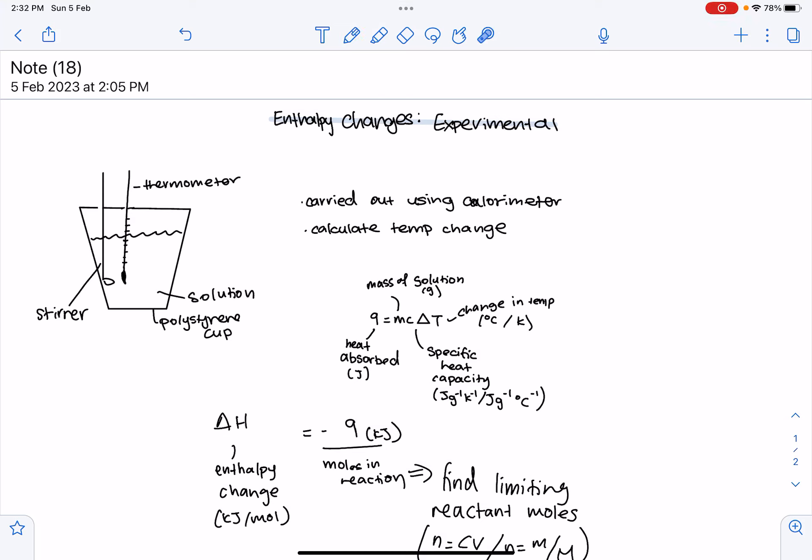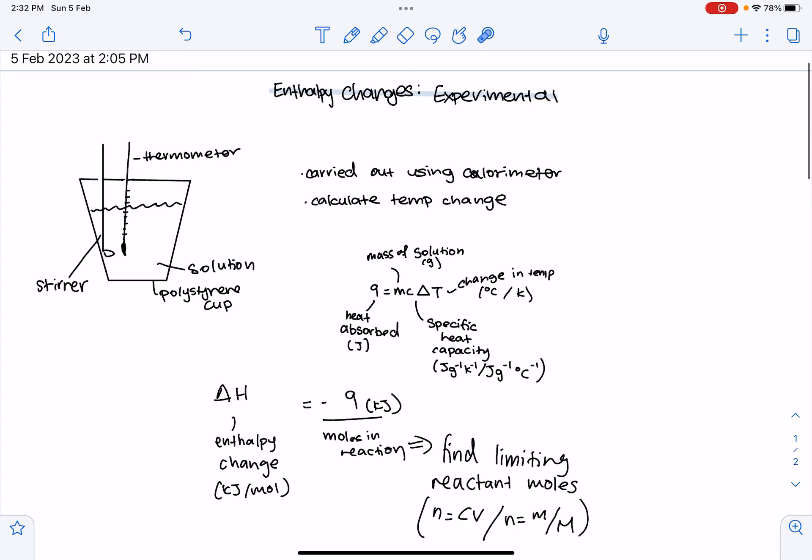In today's video, we're going to be looking at how to calculate enthalpy changes in an experimental way. So, this is the experiment we're going to be using. It is carried out using a calorimeter, and it basically is used to calculate the temperature change.